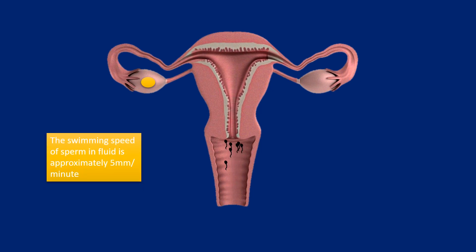The swimming speed of sperm in fluid is approximately five millimeters per minute. Through the cervix, the sperm now enters the uterus. Inside the uterus, some of the sperms are killed by the body's natural defense system, that is the WBCs, and only a very small number of sperm enter the fallopian tube.